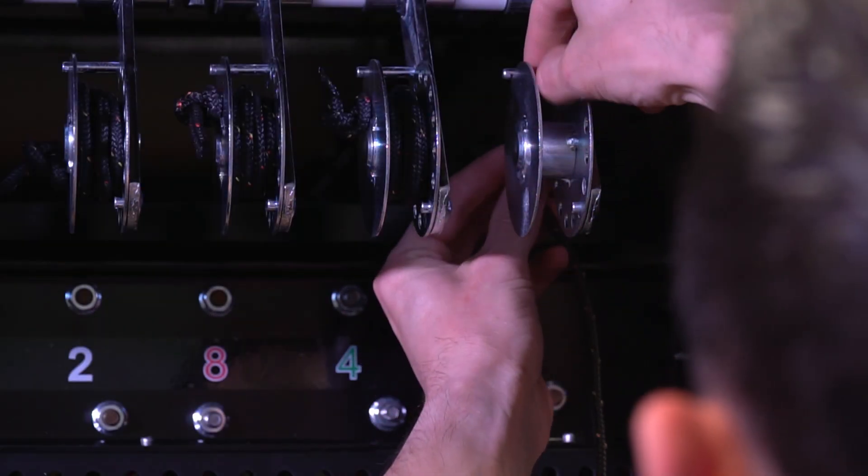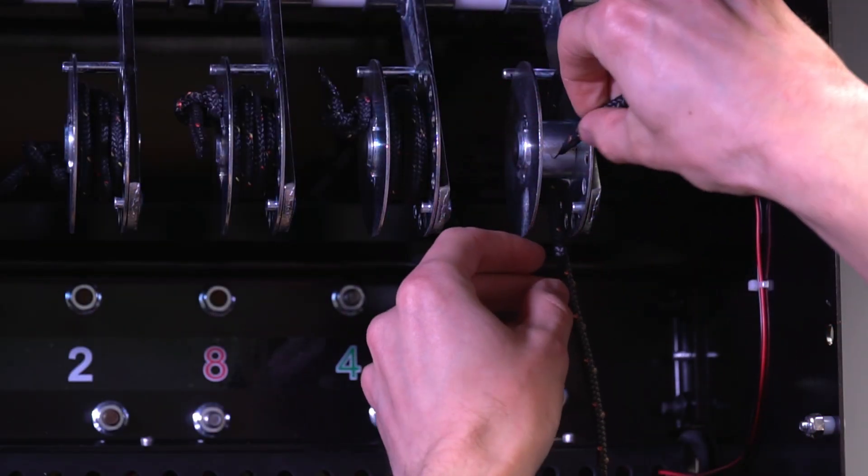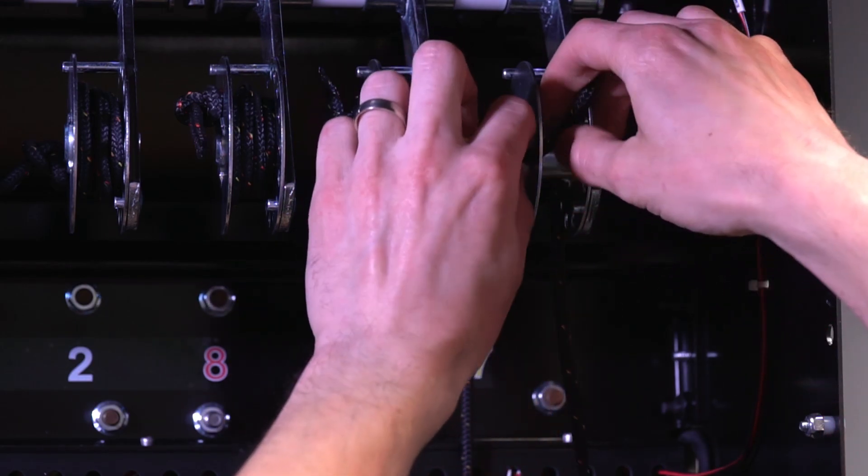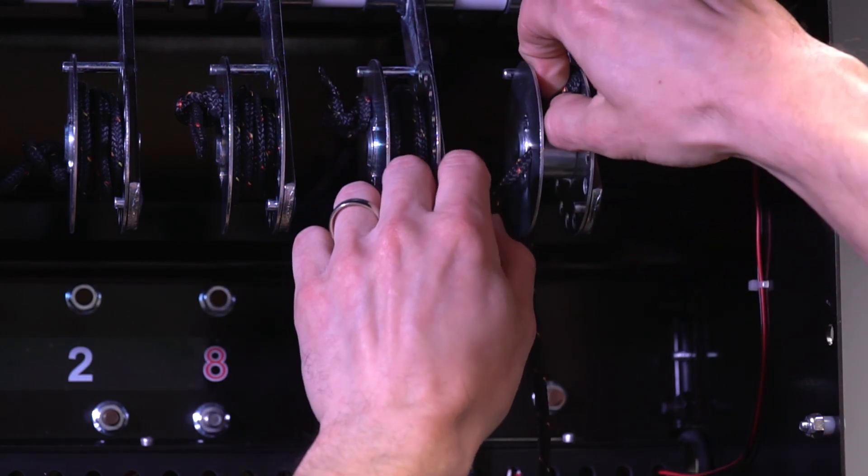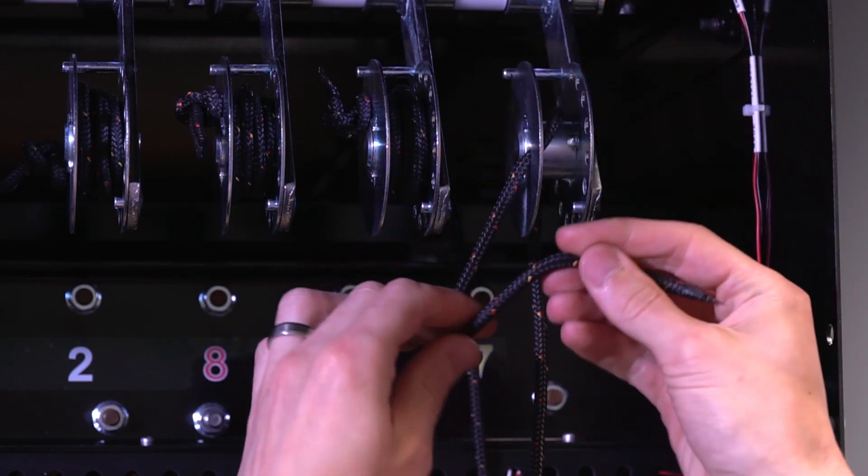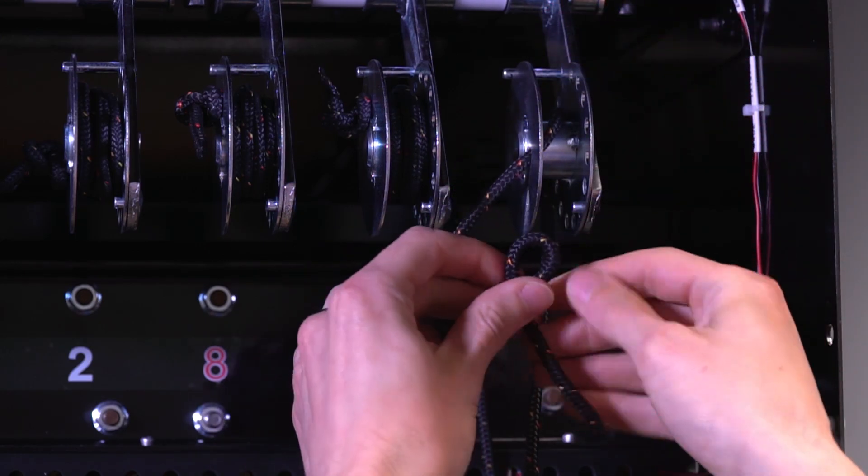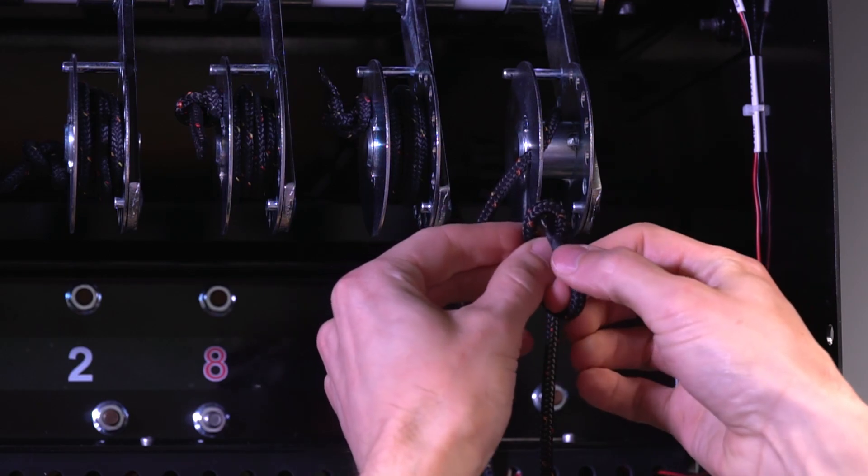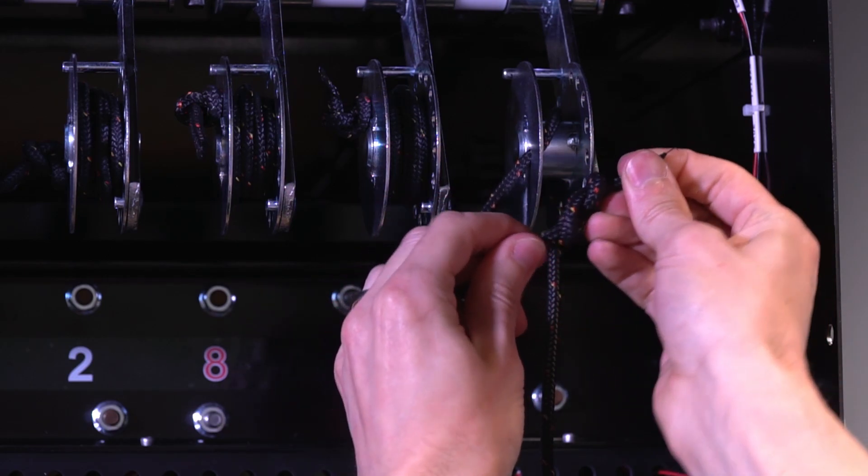Route the end of the replacement string over the top of the reel arm spool and through the hole in the spool side plate. Tie a figure 8 knot at the end of the string and pull the string tight against the reel arm spool.